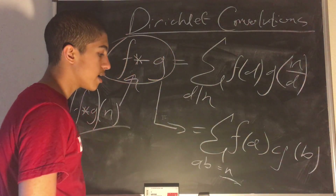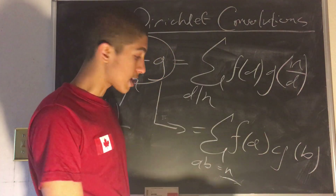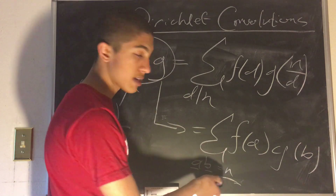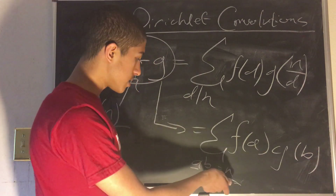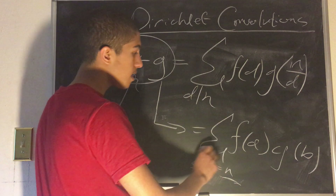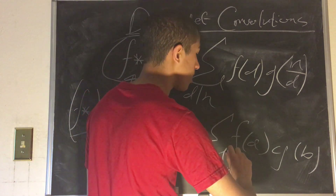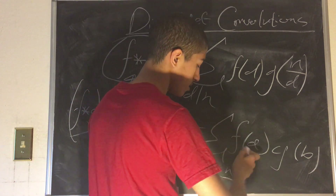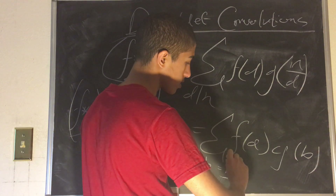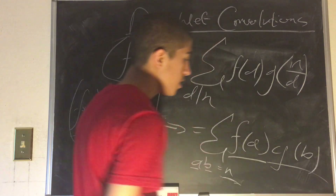We have our input n, and we're saying: let's take varying combinations of a and b such that a times b is equal to n. And let's take the sum over each of those combinations, each recurring term being f of a times g of b.